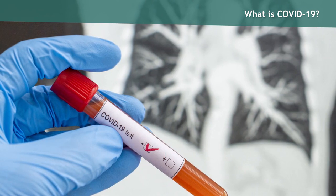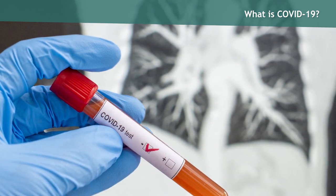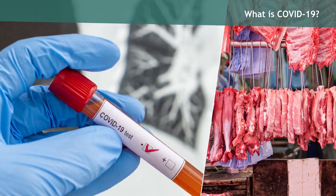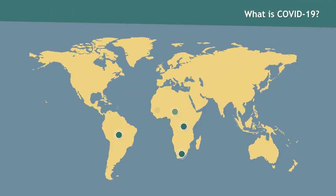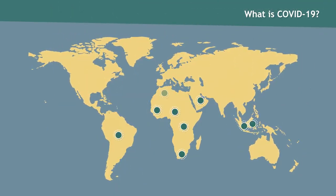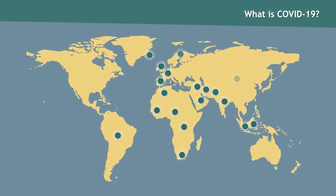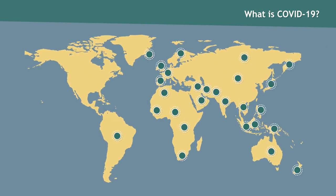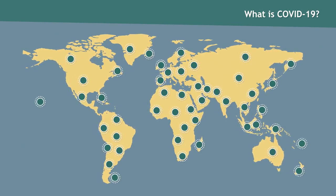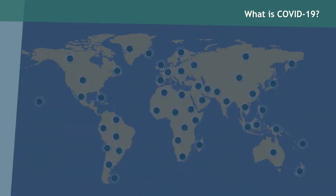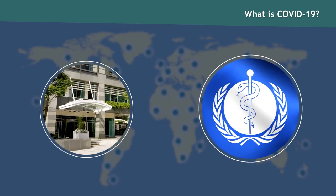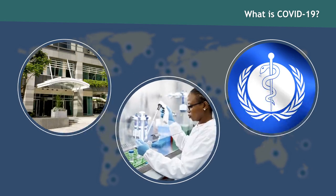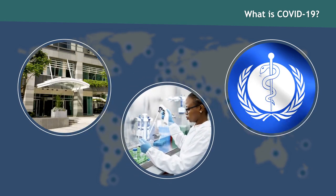Early on, many of the patients in the outbreak reportedly had some link to a specific food and exotic meat market. Currently, there is much that is unknown about the transmissibility of this virus. Since its initial detection, the virus has now spread worldwide. The Centers for Disease Control, CDC, and the World Health Organization, WHO, are researching COVID-19, with new information discovered daily.